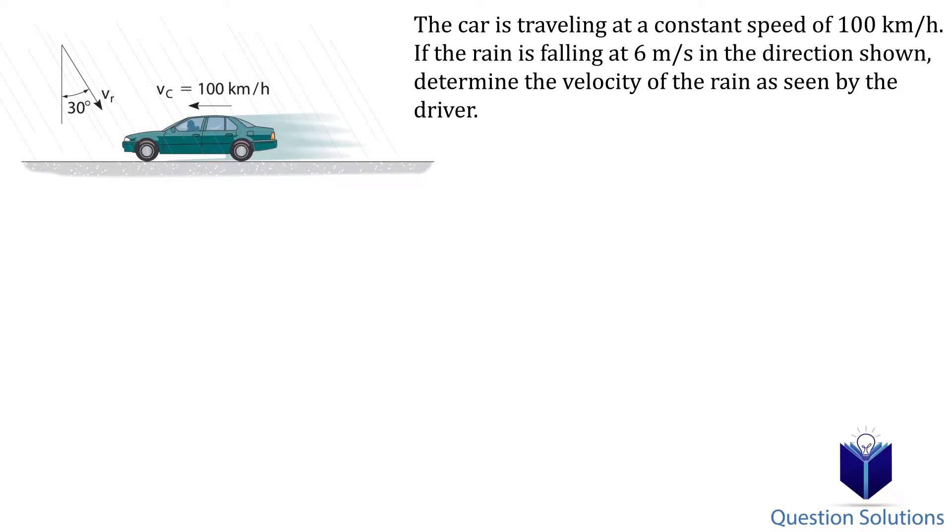In this question, we need to determine the velocity of the rain as seen by the driver of the car. We will assume up and to the right to be positive.